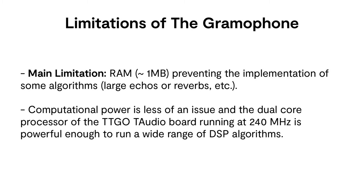The programming limitations of the gramophone are directly linked to those of the TTGO T-Audio board. For instance, the limited amount of RAM — about one megabyte — has a significant impact on the kind of DSP algorithms that can be run on the gramophone. Long delays and echoes or complex reverbs will likely not work on the instrument. The same is true for table-based oscillators, but the Faust compiler now integrates a system to automatically adapt table sizes when using embedded systems requiring small memory footprints. Computational power is less of an issue, and the dual-core processor of the TTGO T-Audio board running at 240 MHz is powerful enough to run a wide range of DSP algorithms.